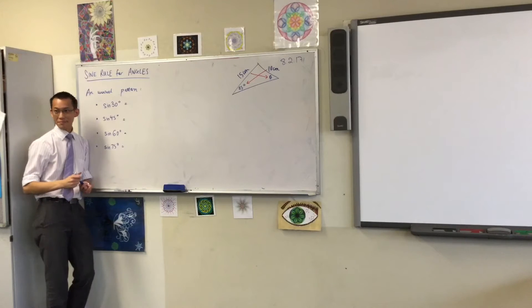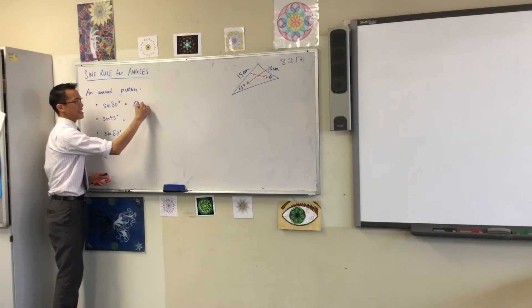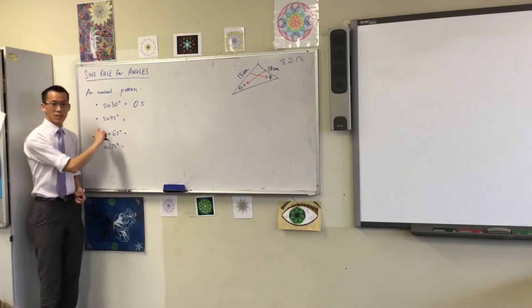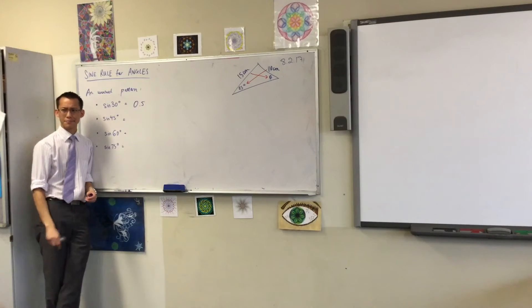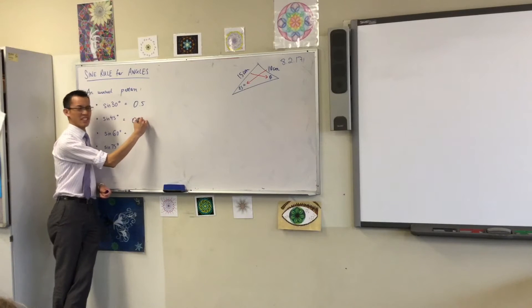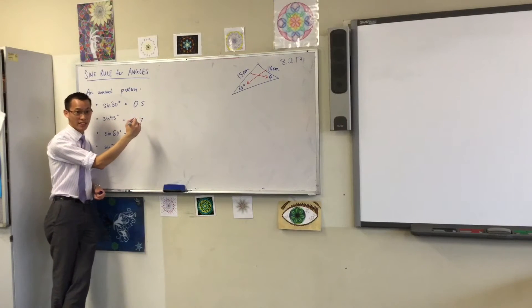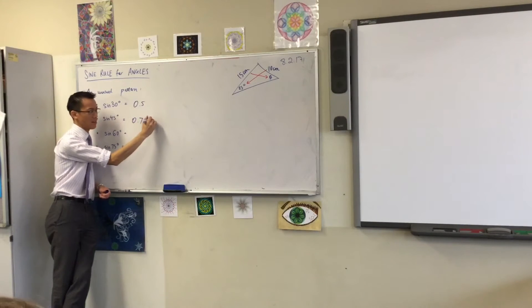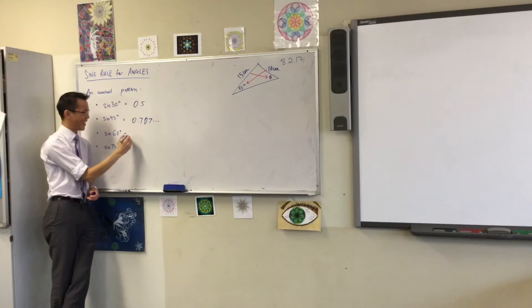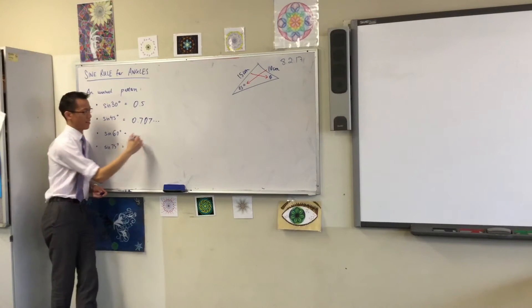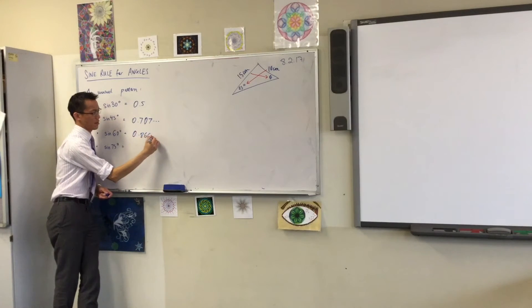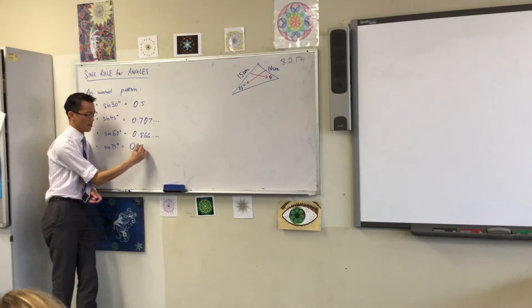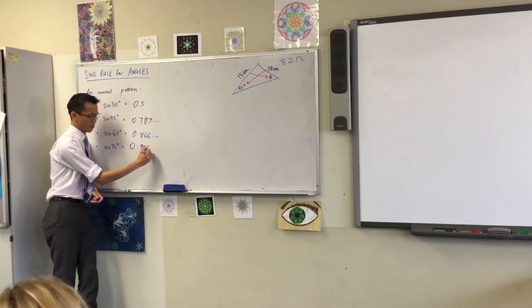Now, sine 30 degrees. Has anyone got it there? Interestingly, it is exactly a half. That's kind of weird, but we'll just leave it for now. Sine 45. Can I have another decimal point? Maybe another two actually. 0.707... Sine 60 degrees. Give me three. 0.866... Last one? 0.966...